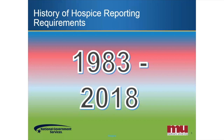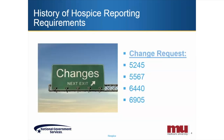Starting in January of 2007, CMS implemented changes to the hospice billing requiring more detailed billing information on their claims. Change Request 5245, effective January 1, 2007, required hospices to report additional detail on their claims. This was the start of many changes hospice providers have seen in the hospice billing requirements.